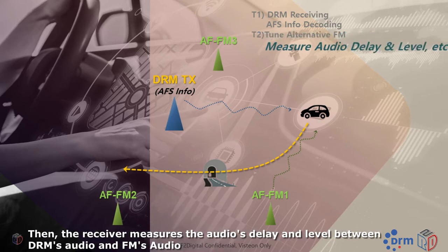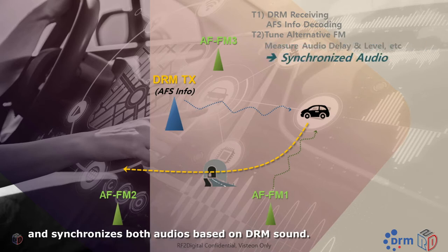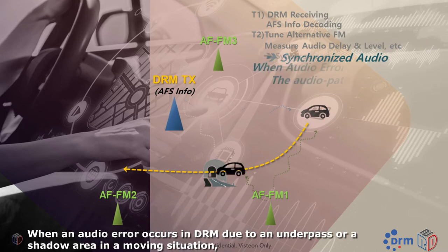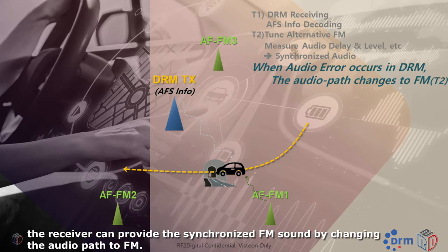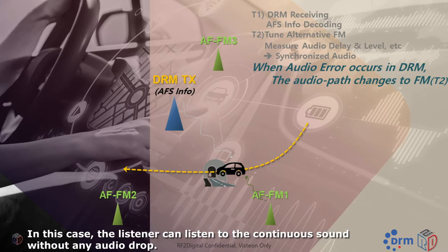Then, the receiver measures the audio delay and level between DRM's audio and FM's audio, and synchronizes both audio streams based on DRM sound. When an audio error occurs in DRM due to an underpass or a signal error in a moving situation, the receiver can provide the synchronized FM sound by changing the audio path to FM. In this case, the listener can listen to continuous sound without any audio drop.